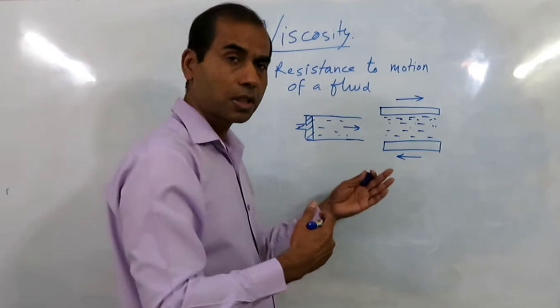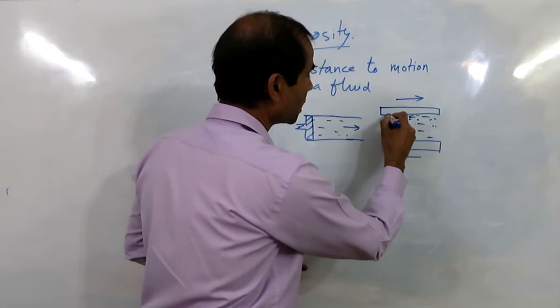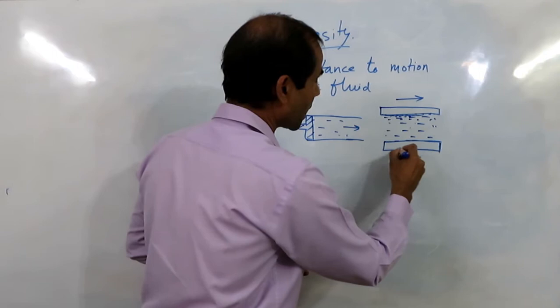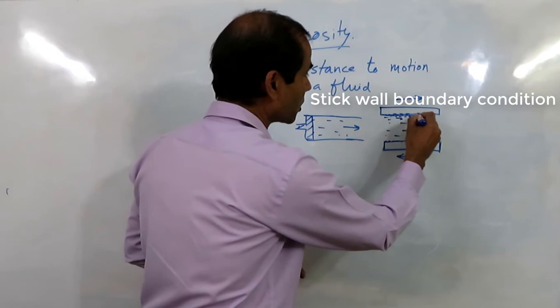In this case, the resistance that this liquid will impose on these two plates will be defined as the viscosity property. We assume that the liquid here is in contact with this plate, and there is a stick wall boundary condition, which means that the liquid is completely sticking to the boundary or the wall. There is no slippage between the liquid and this solid surface.